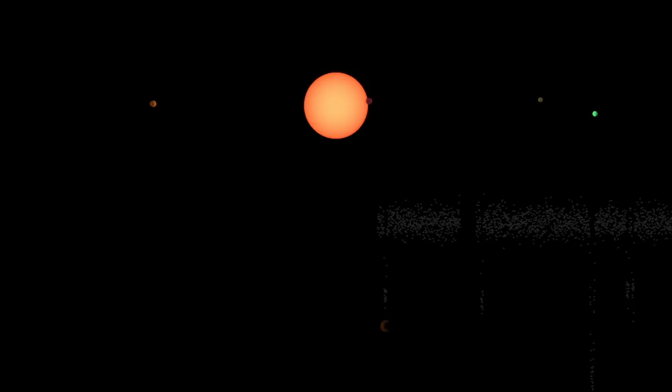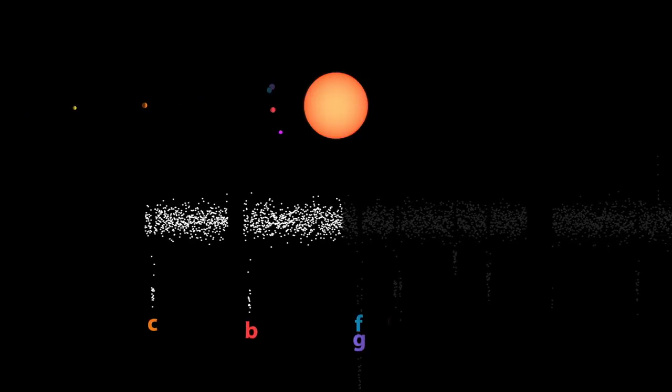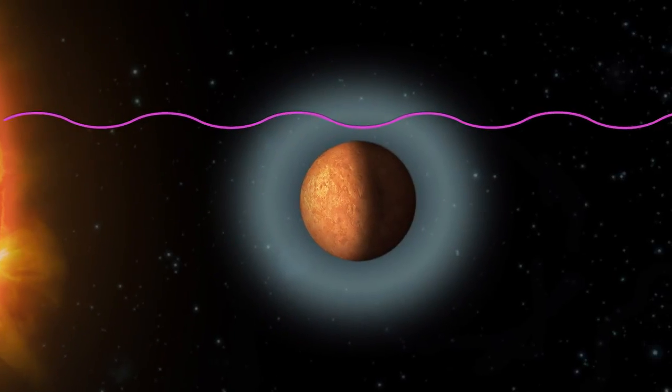As a planet in the TRAPPIST-1 system passes between us and the star, it blocks out a small portion of the star's light. Telescopes like Hubble can look at changes in specific wavelengths of light.